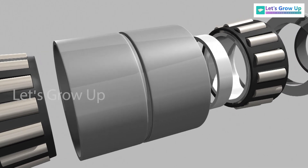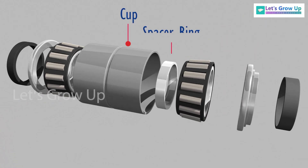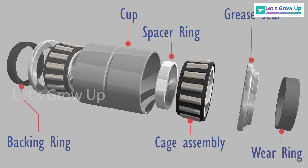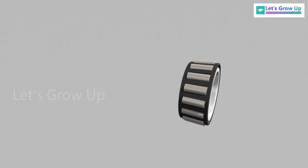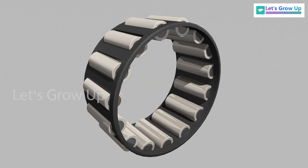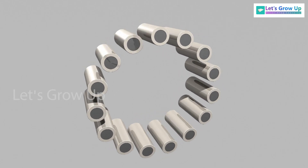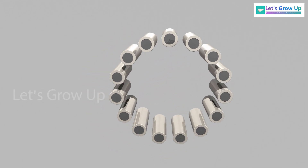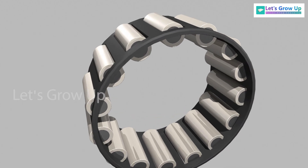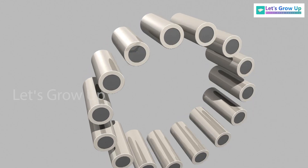The outer cover of this bearing is called the cup. Other components include the spacer ring, cage assembly, grease seal, backing ring, and wear ring. The main component of this rolling element is the rollers, which provide smooth rotation and transmit the loads to the axle.